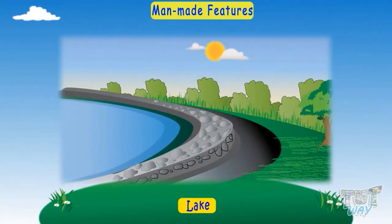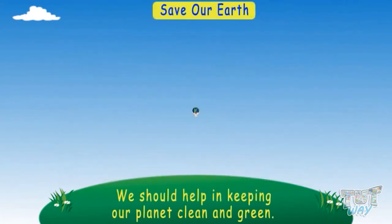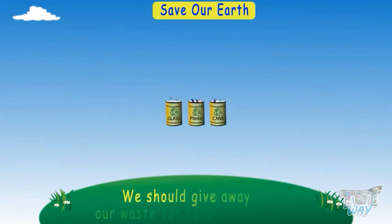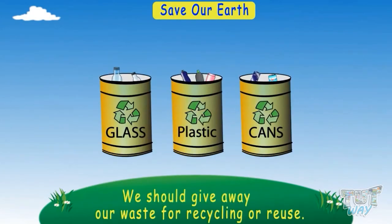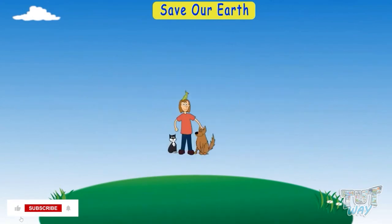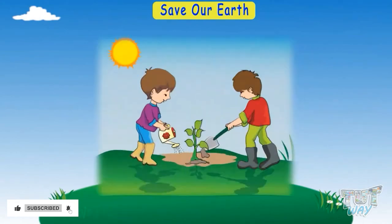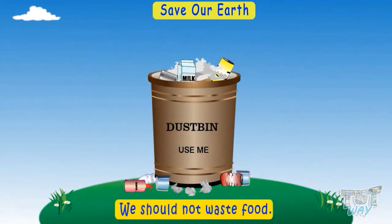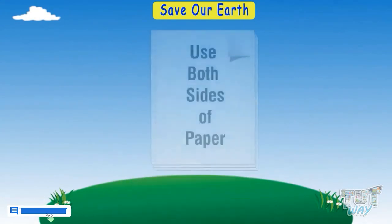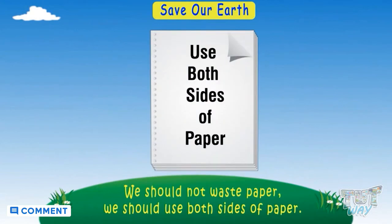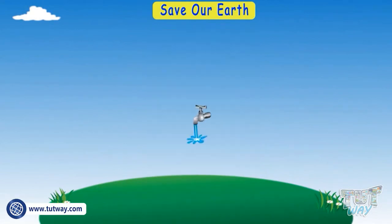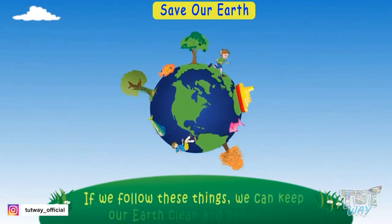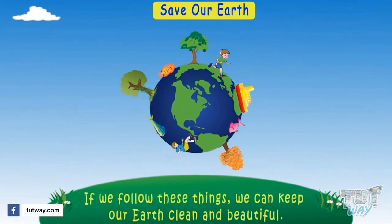Kids, we should help in keeping our planet clean and green. We should turn off the lights when not in use. We should give away our waste for recycling or reuse. We should take care of animals. We should plant more and more plants and trees. We should not waste food or paper — we should use both sides of the paper. We should not waste water either. If we follow these things, we can keep our planet clean and beautiful.